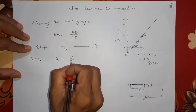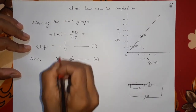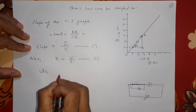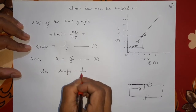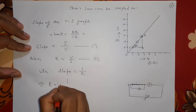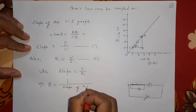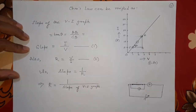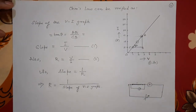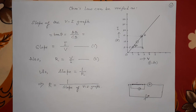We already know R equals V divided by I. So slope equals I divided by V, which means slope is 1 divided by R. Therefore R equals 1 divided by the slope of the V-I graph. This may not be asked exactly this way in questions, but it is important to understand. For a good conductor — a normal metal — you will always get a straight line. A common exam question is: what is the nature of the graph for a conductor? The answer is: it is a straight line. This is all for Ohm's Law. In the next class we will study what is resistance. Thank you.